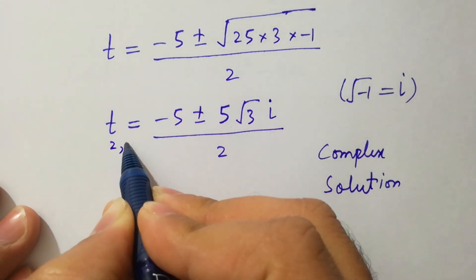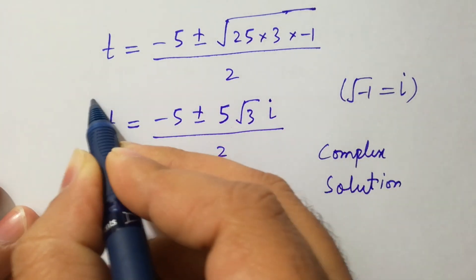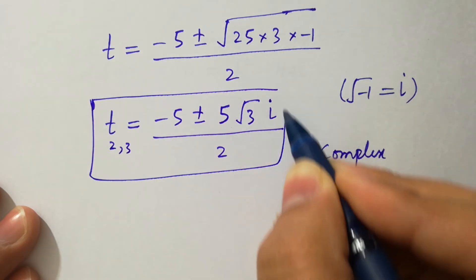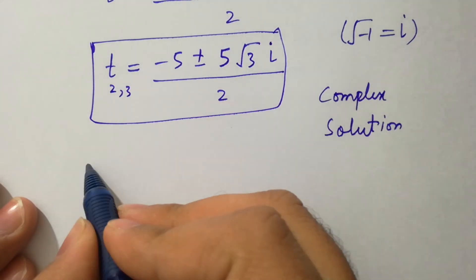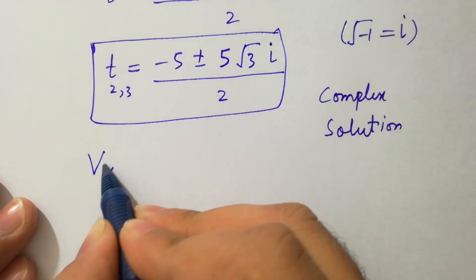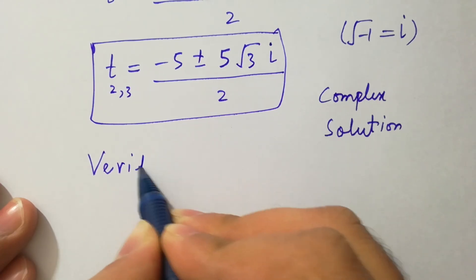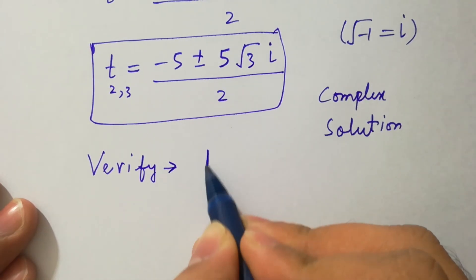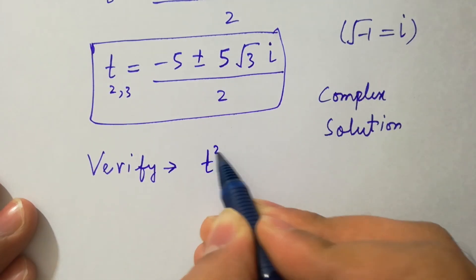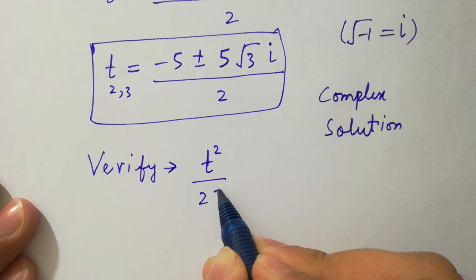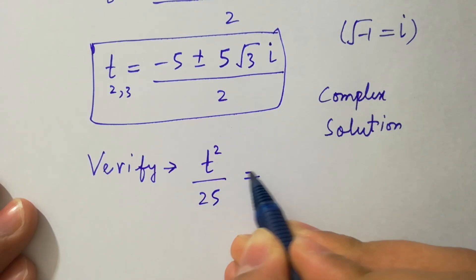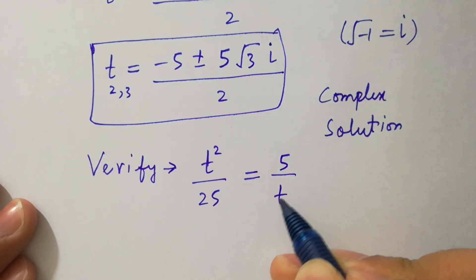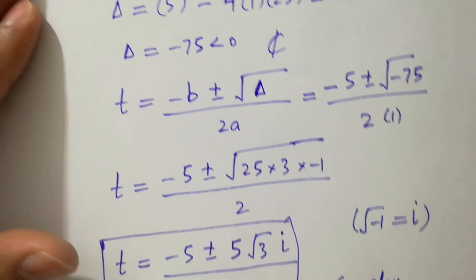These are our second and third solutions. Now in the next step I am going to verify t squared over 25 equals 5 over t.